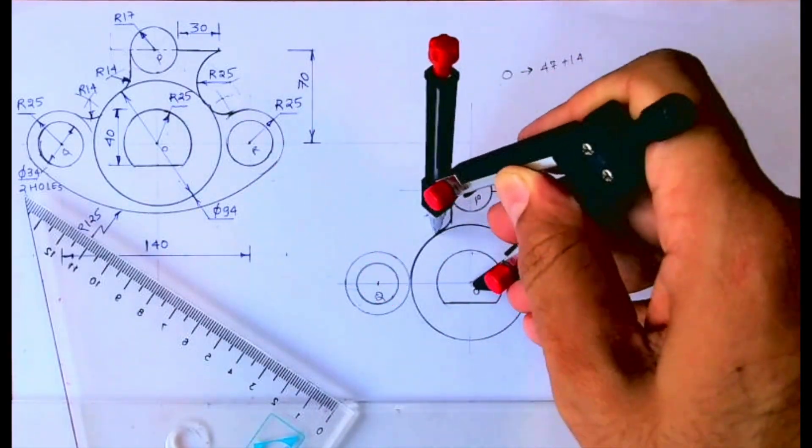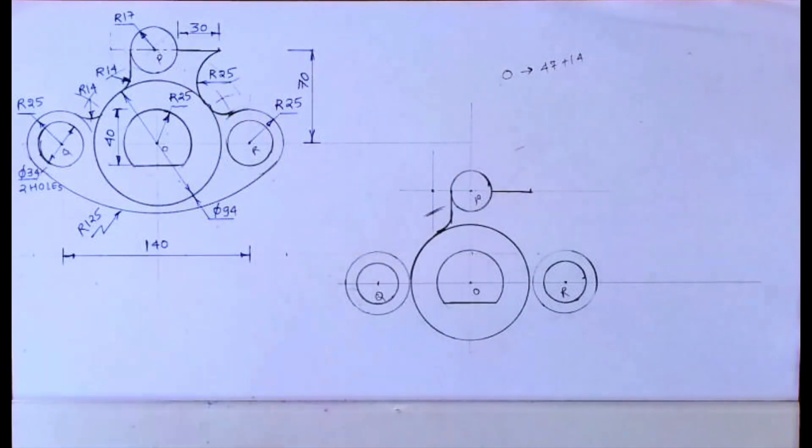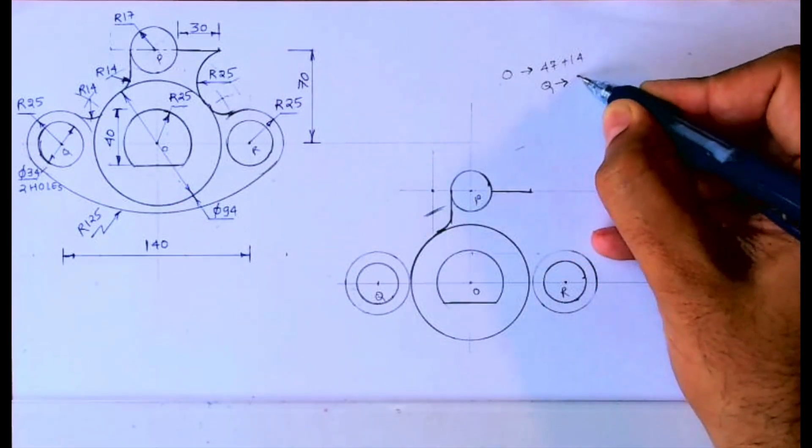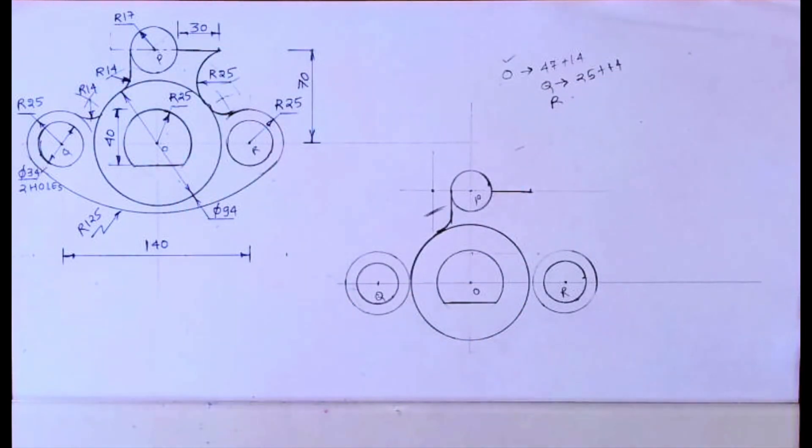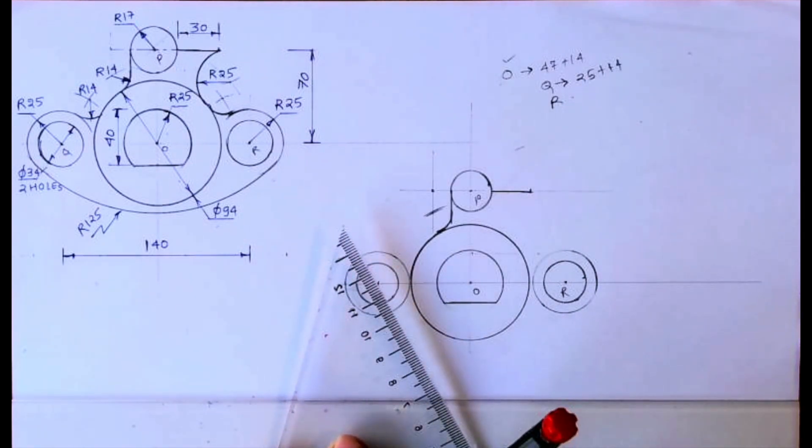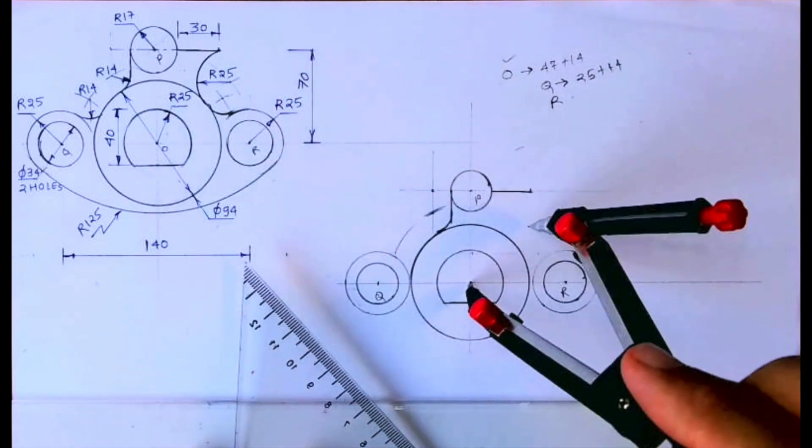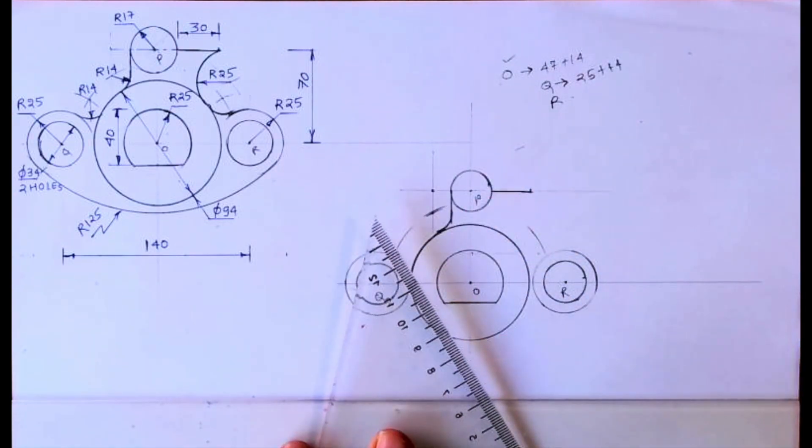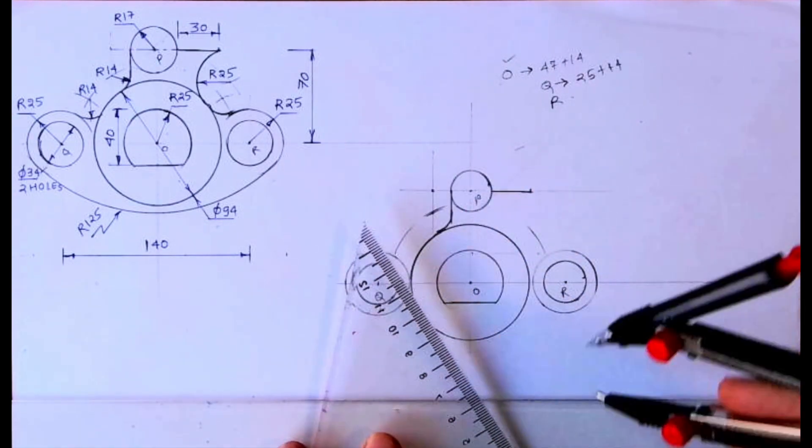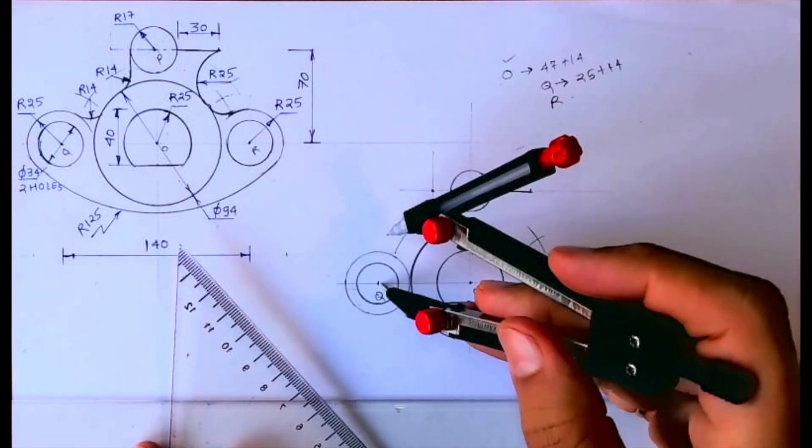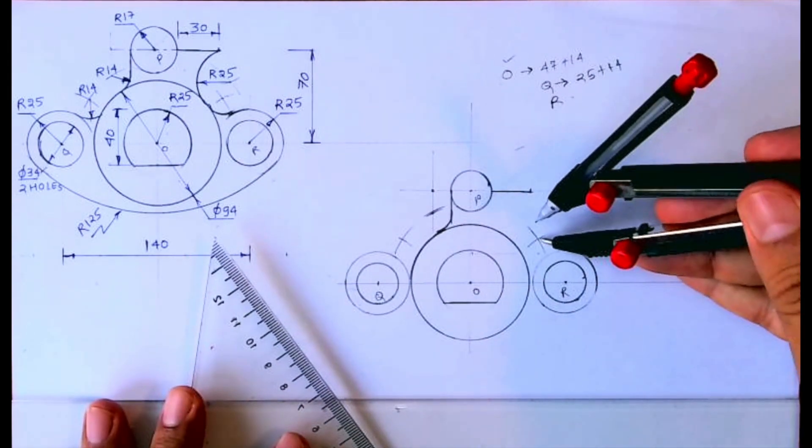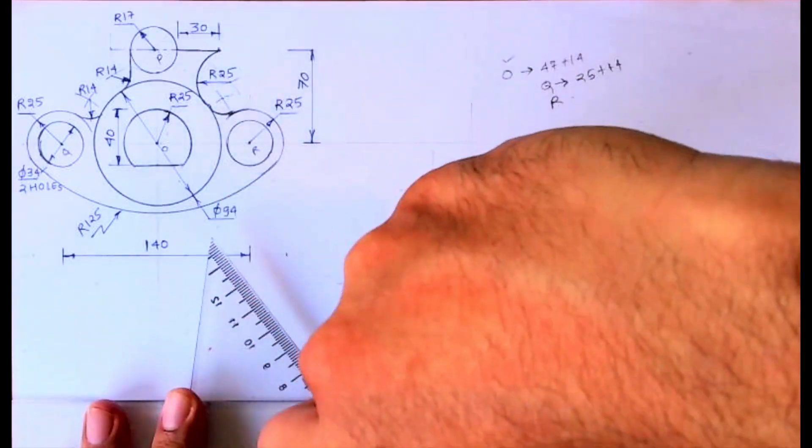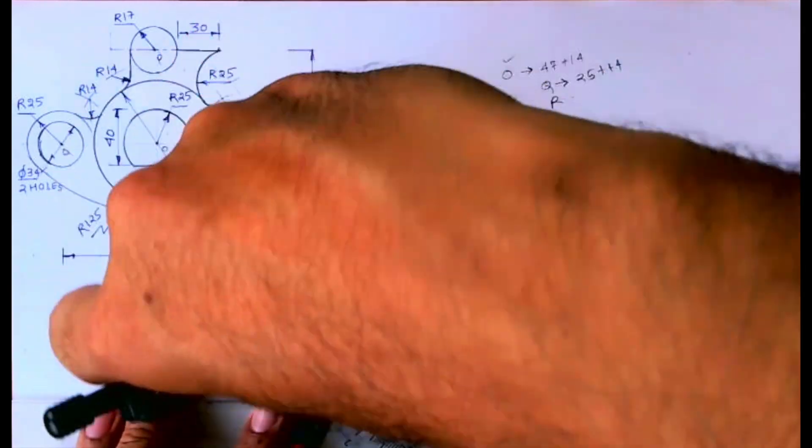So from this point we can draw radius 14. I've done a parallel line plus from O, 47 plus 14. Now we need to draw 14 on both the sides. So from Q we will cut 25 plus 14 and from R also, and from O we'll cut 47 plus 14. From this point we'll cut radius 14, from this point also we'll cut radius 14.